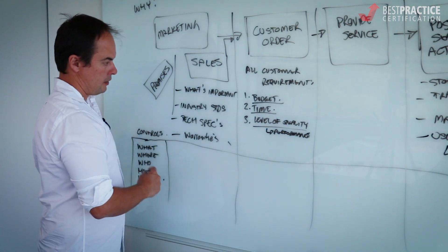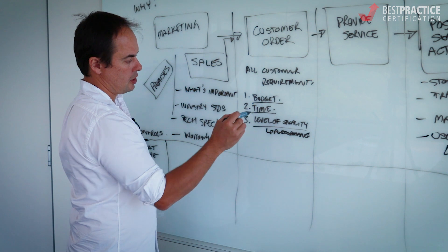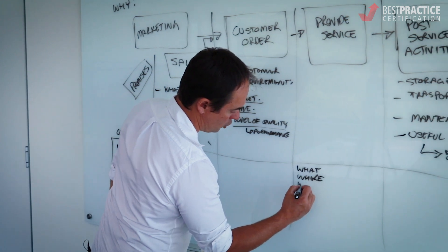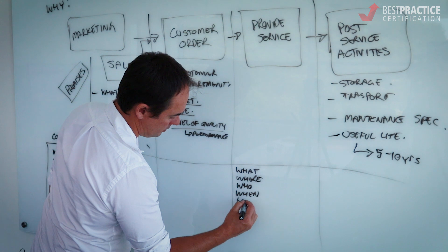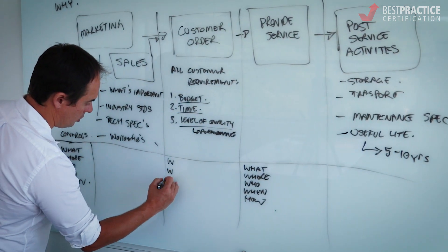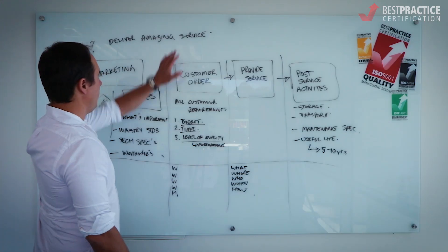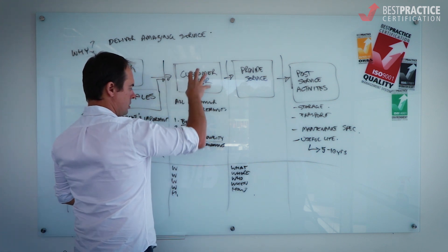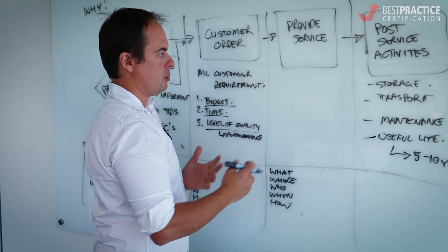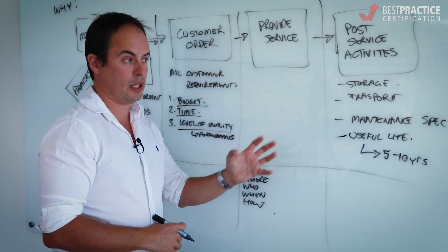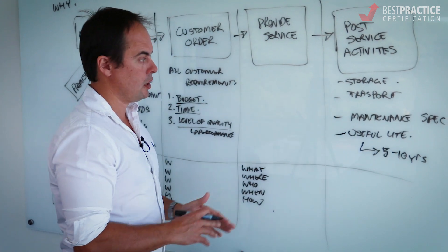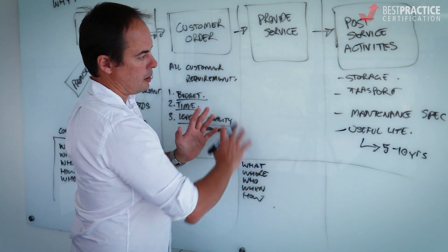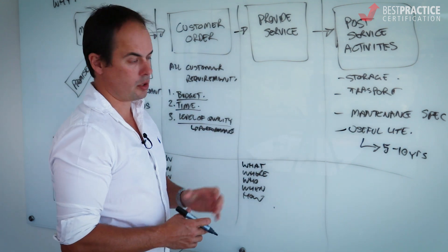In terms of providing the service — if those are the promises you made around budget, time, and level of quality, what needs to happen here? What, where, who, when, and how all apply here as well, and the why is all about delivering an amazing service. We want to transpose the marketing commitments, the promises, the agreement into our service provision section — the powder coating factory, the abrasive blasting, the quality level of abrasive blasting, the level of quality in coating — so that we can meet these commitments based on the science and the policies, procedures, and work instructions we've got.